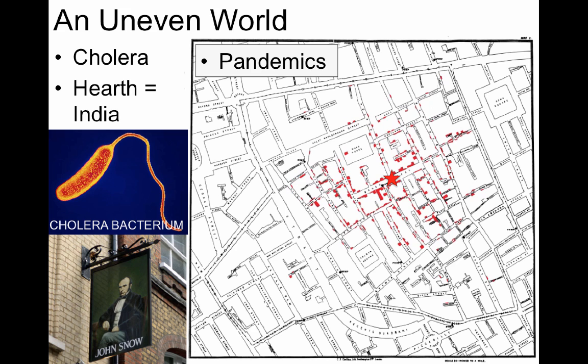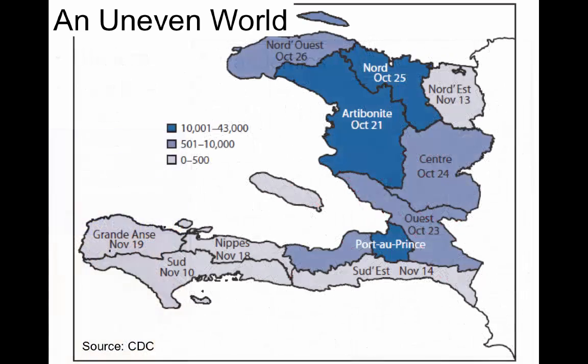While cholera is almost unheard of in the developed world, it still affects between 3 to 5 million people a year, with often around 100,000 people dying from the disease each year. The worst cholera outbreak in recent history has occurred in the poorest country in the Western Hemisphere, Haiti. In 2010, after a terrible earthquake that killed over 100,000 people and devastated the nation, stagnant water and warm temperatures provided the perfect breeding ground for cholera. An epidemic, or regional outbreak, has persisted off and on ever since, causing perhaps more than 9,000 deaths over that span. These examples show us how geography can help us understand, and hopefully prevent, human tragedies.